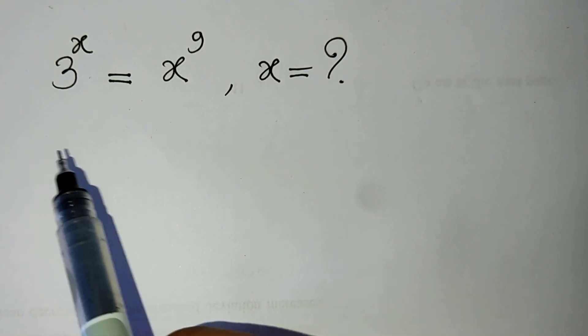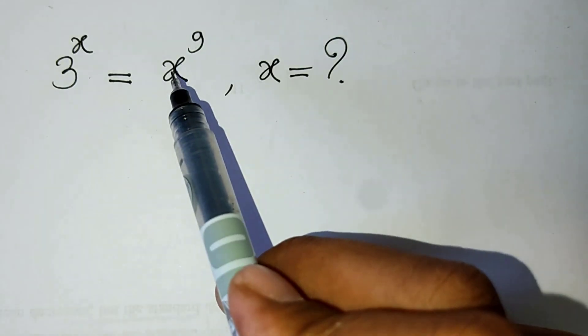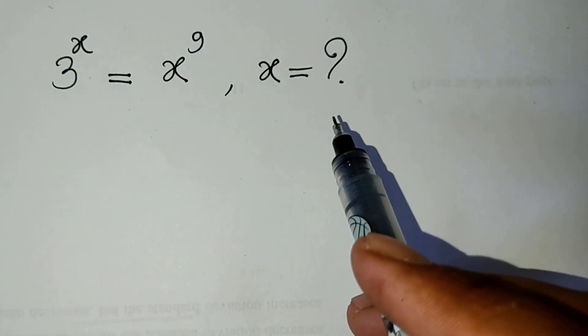Hello, here is my problem. 3 power x equal to x power 9. What is the value of x?